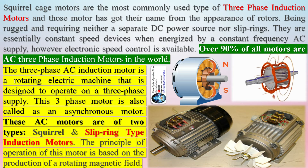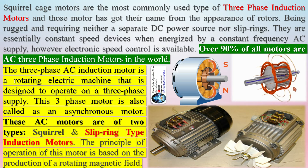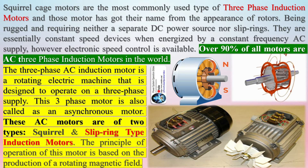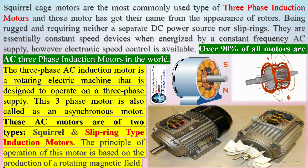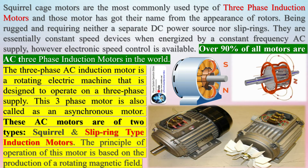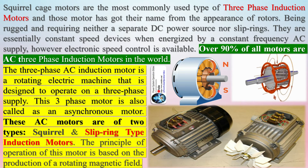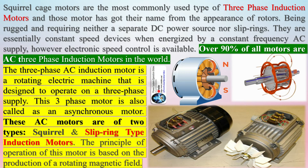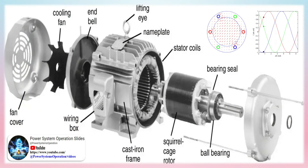Over 90% of all motors in the world are AC three-phase induction motors. The three-phase AC induction motor is a rotating electric machine designed to operate on a three-phase supply, and is also called an asynchronous motor. These AC motors are of two types: squirrel cage and slip ring type induction motors.